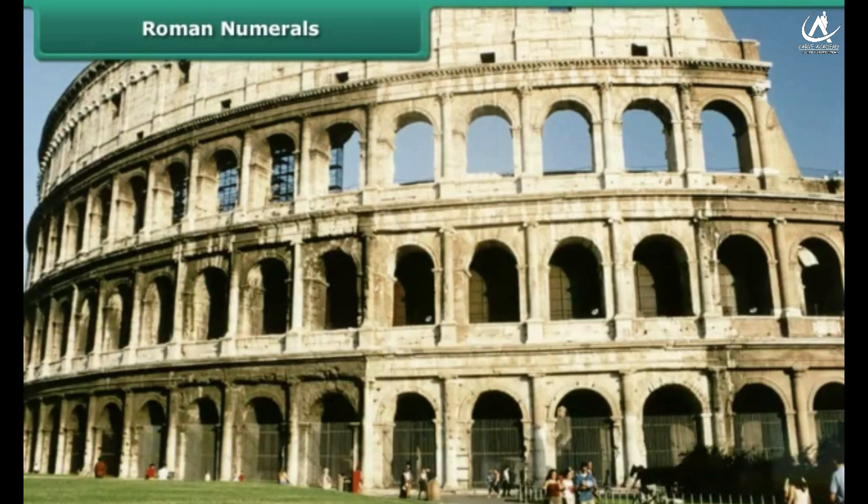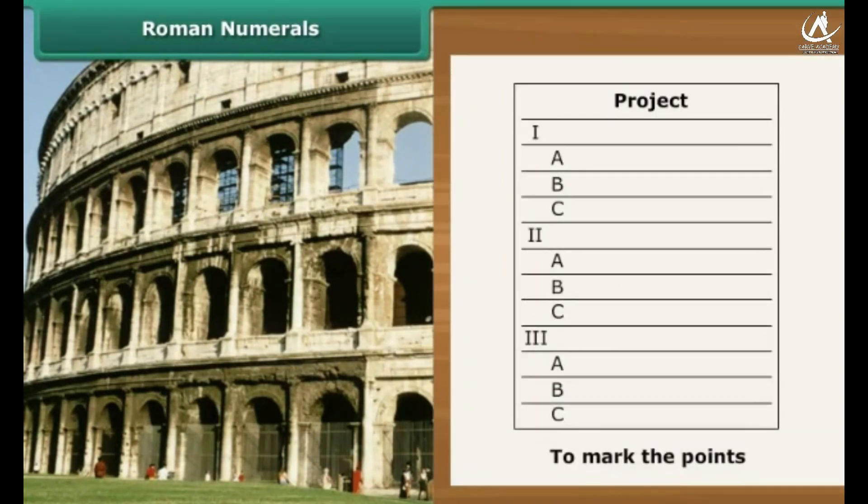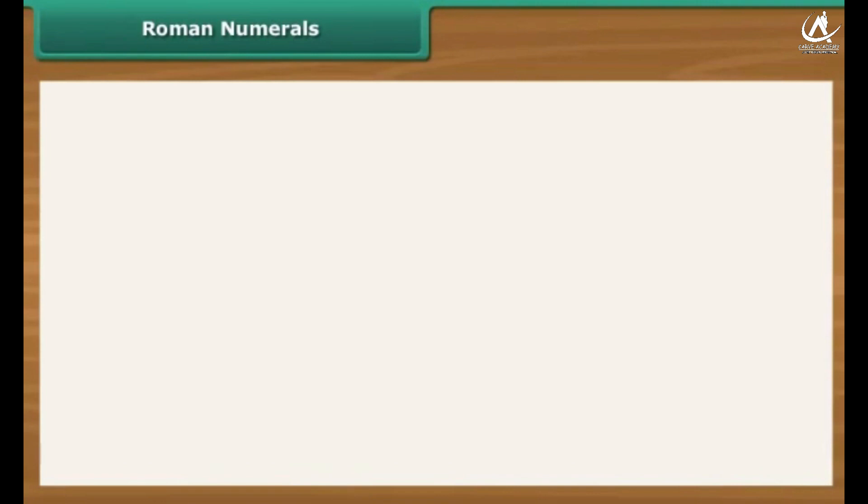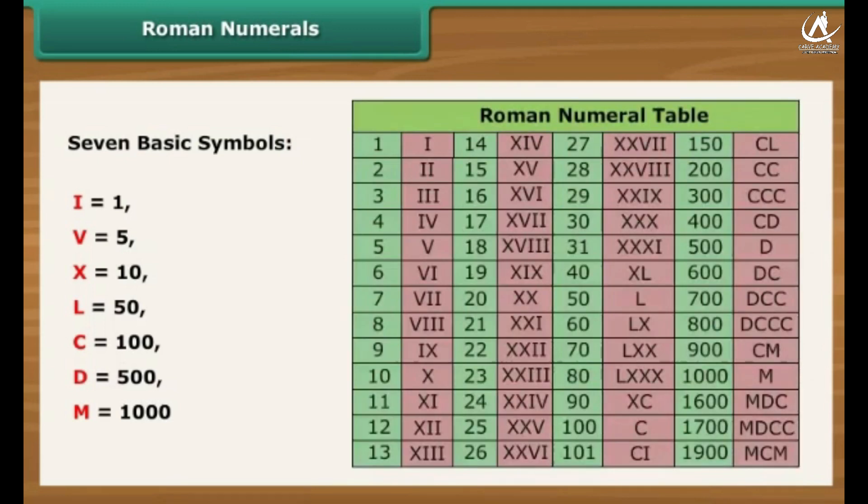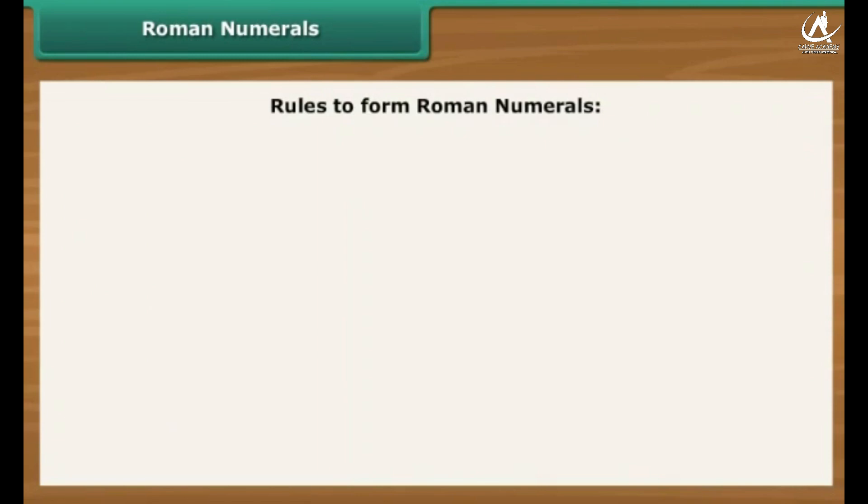We use the Hindu-Arabic system of numerals. Another system of writing numerals is the Roman system. It is one of the oldest systems of writing numbers which is still prevalent at many places. Unlike the Hindu-Arabic numeral system, Roman numeral system uses seven basic symbols to represent different numbers. The symbols are as follows. Look at the table of symbols.